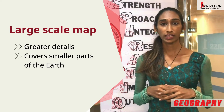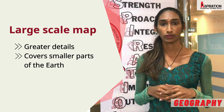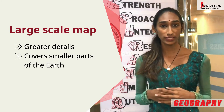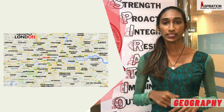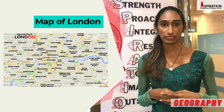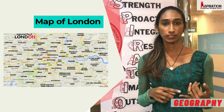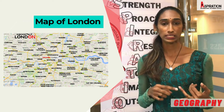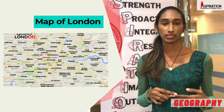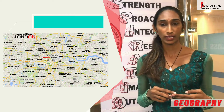However, a large scale map shows a smaller amount of area with a greater amount of details. Check out the map of London. There are lots of details in here — for example, individual streets, towns, roads, and the River Thames which flows in the city of London.